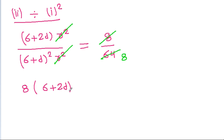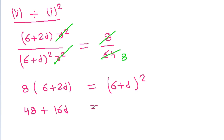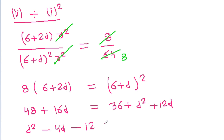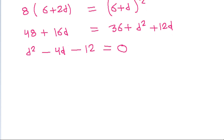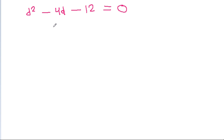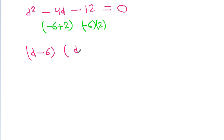After simplification, we get 12D − 16D = −4D and 36 − 48 = −12, giving −4D² − 12 = 0. Factoring, we get (D − 6)(D + 2) = 0, so D = 6 or D = −2.